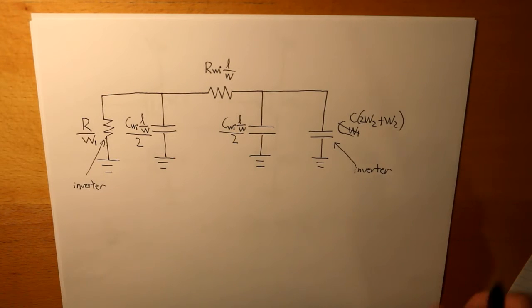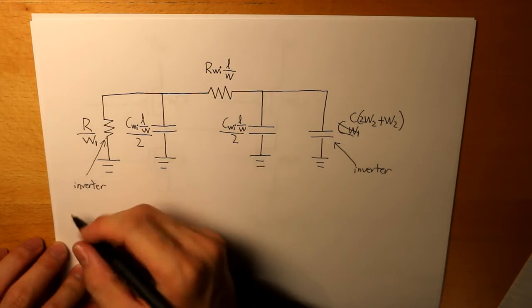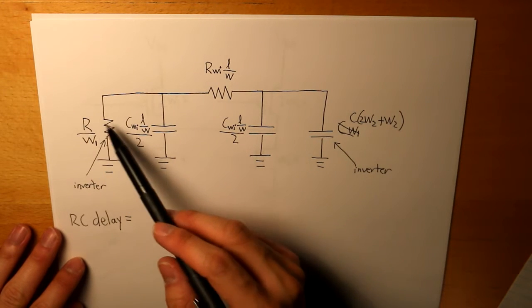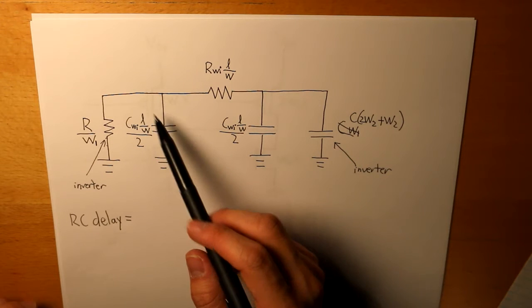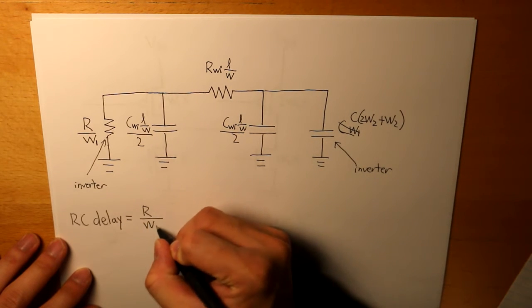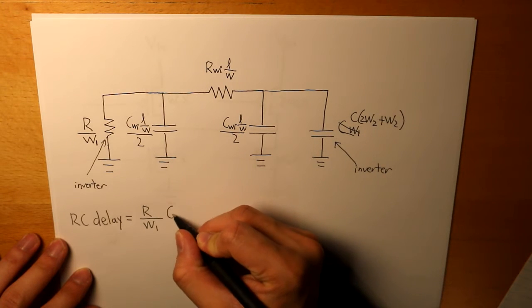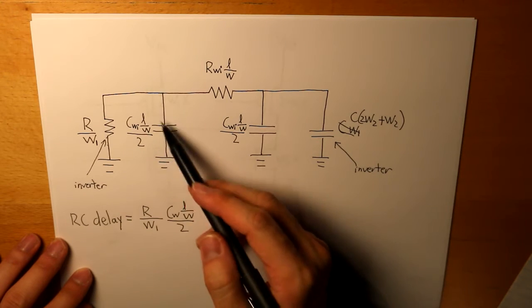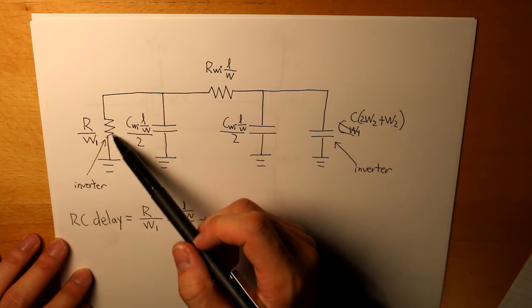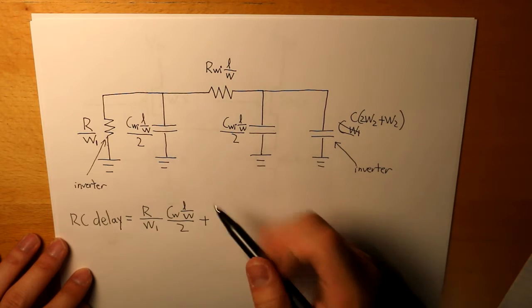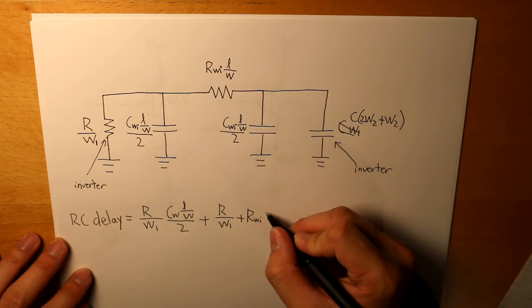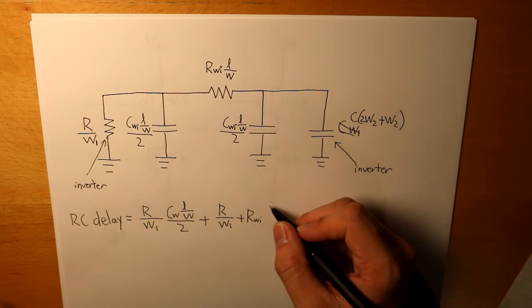Finally, we're going to calculate our RC delay. The equation will look like this: we take the first inverter and find the delay for the first capacitance, which is R divided by W1 multiplied by that capacitance. Our second term uses both the inverter resistance and the wire resistance added together — R over W1 plus R_wire multiplied by the ratio of length over width of the wire.